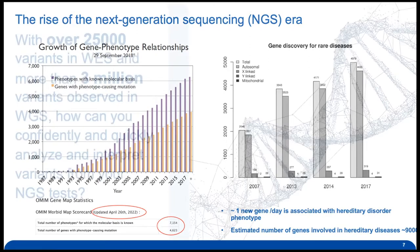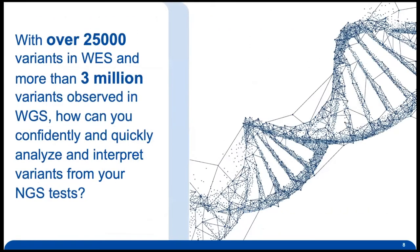With over 25,000 variants in a whole exome setting and more than 3 million variants in a whole genome setting, the question that arises is: how can someone confidently, quickly, and accurately analyze and interpret variants from an NGS test such as whole exome or whole genome? This is the big question that everyone tries to answer, to make sure they have the proper tools to provide patients with accurate and reliable diagnosis of hereditary disorders.